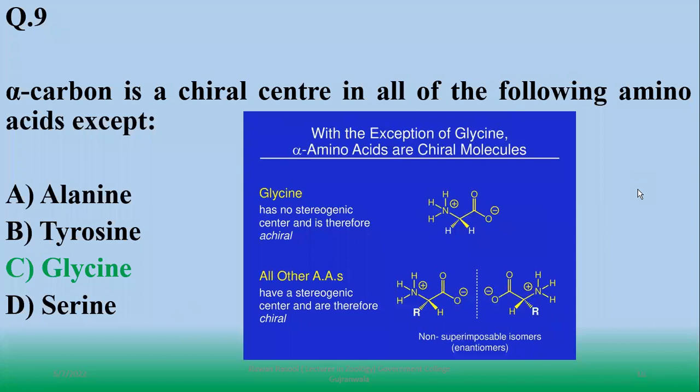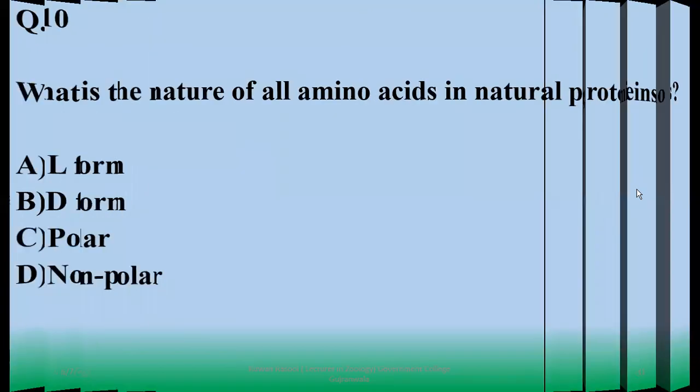So that's why glycine has no stereogenic center, therefore it is achiral. Baaki saari amino acids hamare paas chiral hain. Number 10: what is the nature of all amino acids in natural proteins? All amino acids which are found in naturally occurring proteins are basically L-amino acids or levo amino acids. So right option is A, levo form.